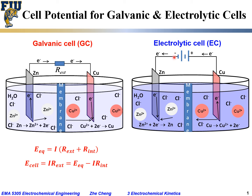If this external power supply has a large enough voltage to counteract the natural equilibrium cell potential between zinc and copper, then you can reverse the direction of electron flow. This is called an electrolytic cell. In this case, the applied voltage between the two electrodes equals the equilibrium cell potential for this electrochemical cell when the external circuit is open, there is no leakage, and there is a single electrode reaction on each electrode.